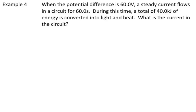So in this example, we know the voltage of the potential difference is 60 volts, we know the current is flowing for 60 seconds, and 40 kilojoules of energy is converted into light and heat. Question I'm asking, what is the current in the circuit?